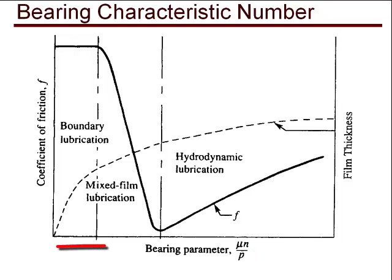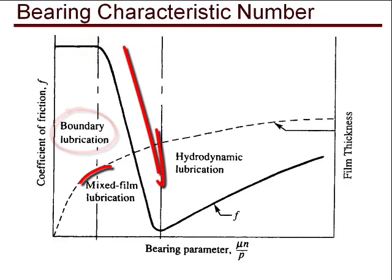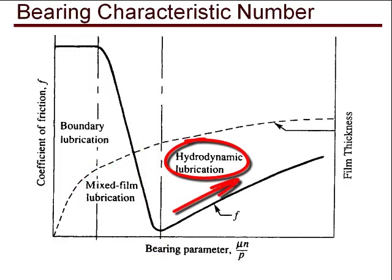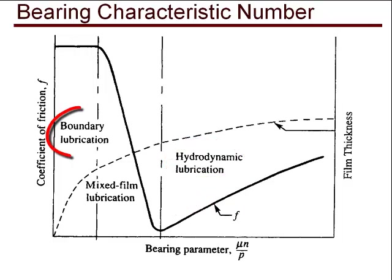Now notice as the bearing parameter increases, the coefficient of friction is constant through a region called the boundary lubricated region, then drops off to a minimum through the mixed film region, and rises through the hydrodynamic region. Plain bearings mostly operate in this boundary lubricated region, but at times operate also in the mixed film region.